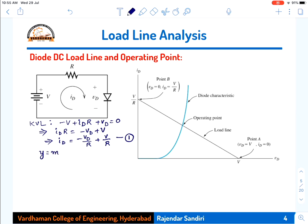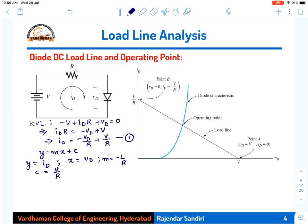The blue color line is the diode characteristic, and the DC load line joins point A on the X-axis at (V, 0) and point B on the Y-axis at (0, V/R). The load line intersects the diode characteristic at the operating point or Q point, also called the quiescent point or DC bias point. Projecting Q onto the axes gives VDQ on the X-axis and IDQ on the Y-axis.